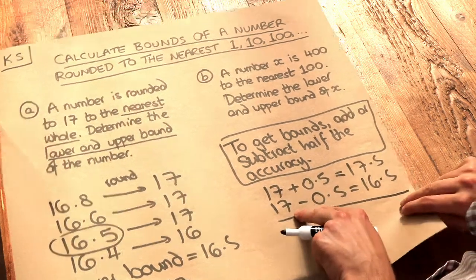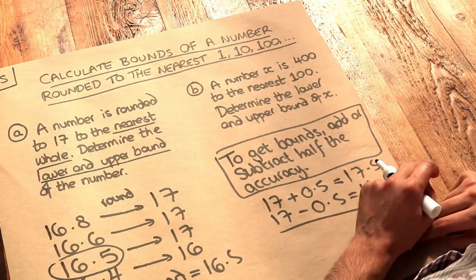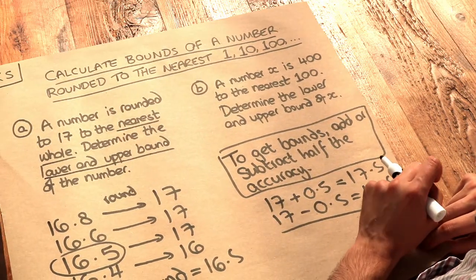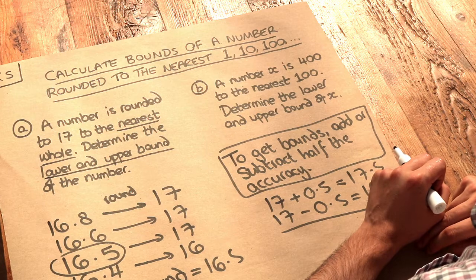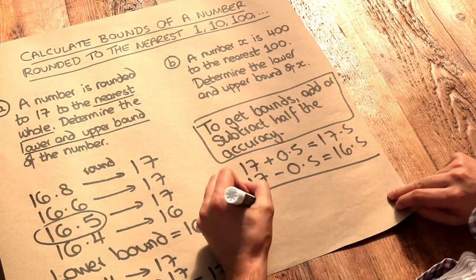And let's use that principle on the second number here. A number X is 400 to the nearest 100. Determine the lower and upper bound of X. So if you use the same principle,